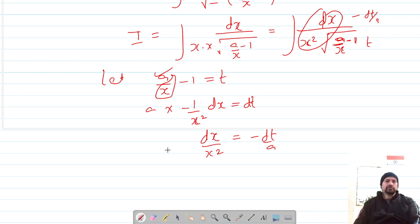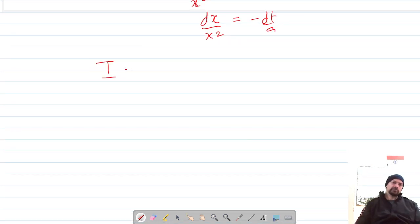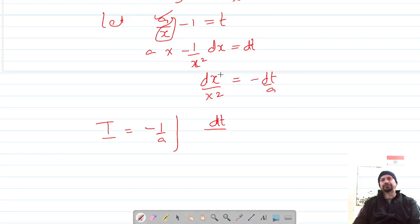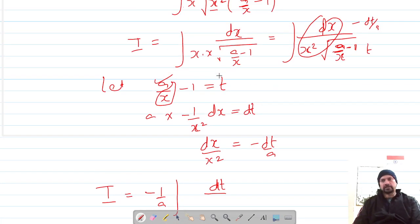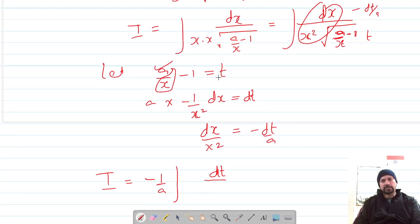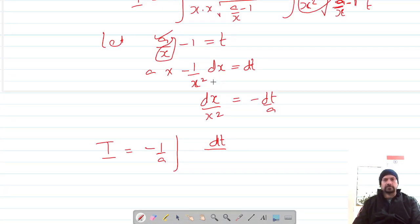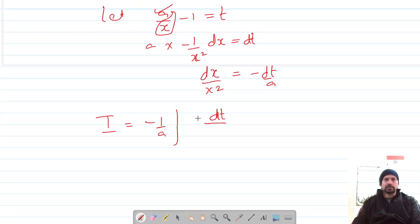So this becomes negative dt over a, and this is root t. Let's write our integral in terms of t. This is negative 1 over a, the integral element is dt, and now it's under root t.